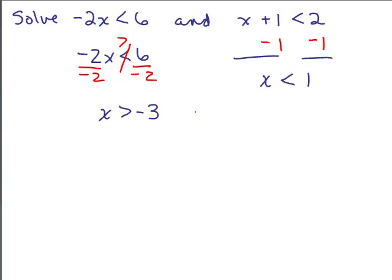So I want both things to happen: x has to be greater than negative 3 and at the same time less than 1. Can you think of any numbers that are bigger than negative 3 and also less than 1? Well, 0 works, or negative 2. Sometimes there are no solutions — I'll show you some of those on the next video — but for this one we can see there is going to be a solution.